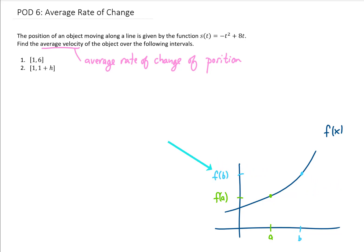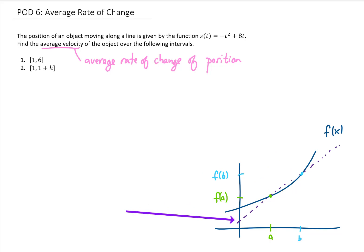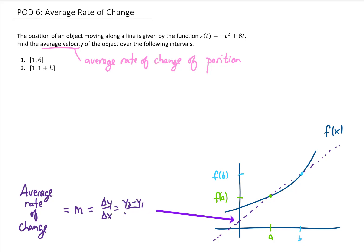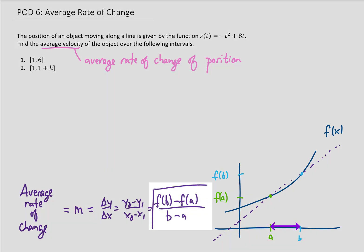The average rate of change of this function between the x values a and b is given by the slope of the line that passes through those two points. The slope of a line is given by the change in the y values divided by the change in the x values — y2 minus y1 over x2 minus x1. The difference between the two y values is f of b minus f of a, and the difference between the two x values is b minus a. So this formula gives us the average rate of change of a function on an interval a to b.